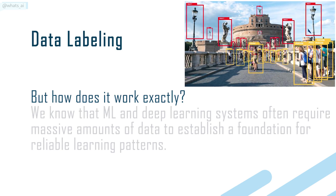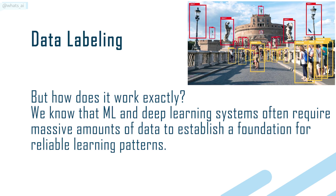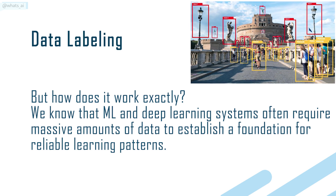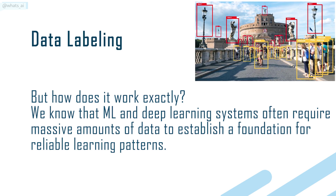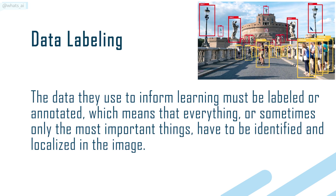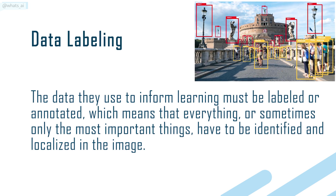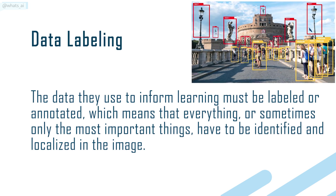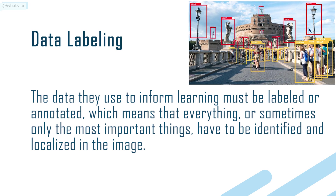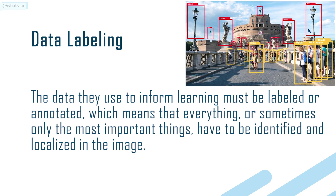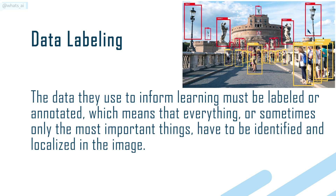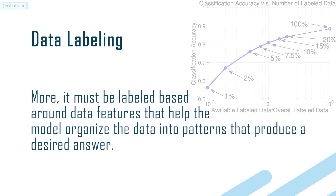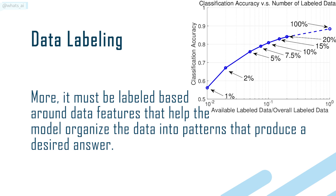ML and deep learning systems often require massive amounts of data to establish a foundation for reliable learning patterns. The data they use to inform learning must be labeled or annotated, which means that everything — or sometimes only the most important things — has to be identified and localized in the image. It must be labeled based around data features that help the model organize the data into patterns that produce a desired answer.